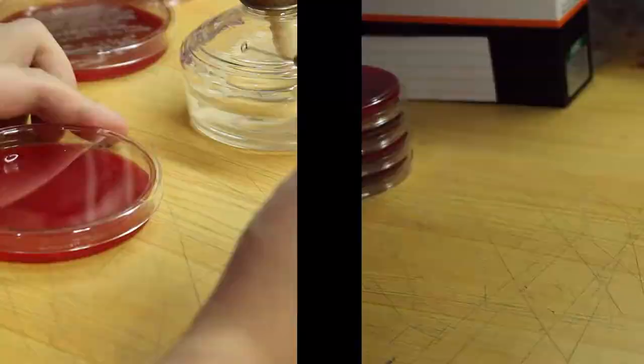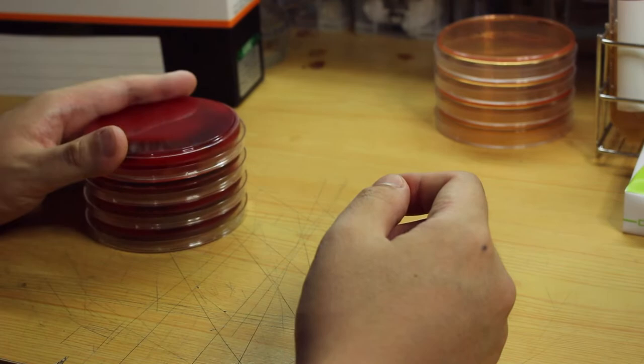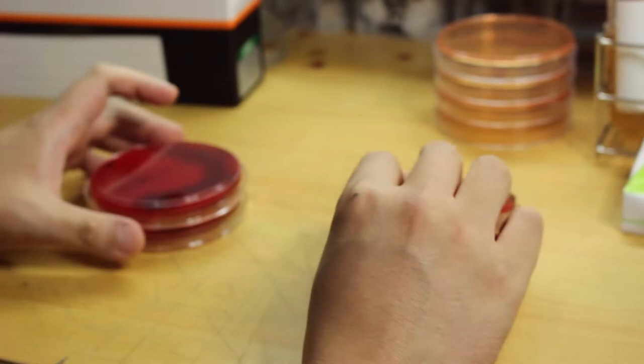Here I have four pure samples. I mark them as S1, 2, 4, and 5. Don't ask where the three goes. I'll pick the colony one more time to make sure I have enough bacteria for the next step.